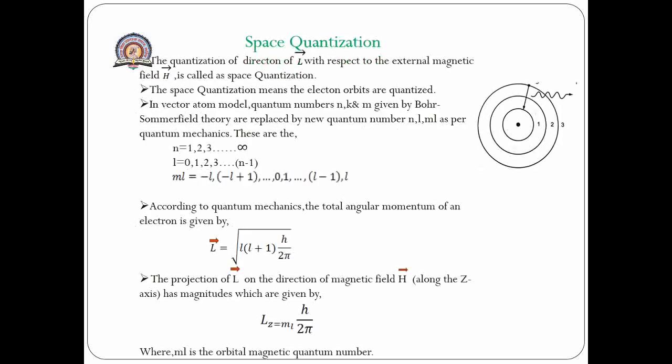For spatial quantization, also called space quantization: the quantization of the direction of L-bar with respect to the external magnetic field H-bar is called space quantization. Space quantization means the electron orbits are quantized in space.